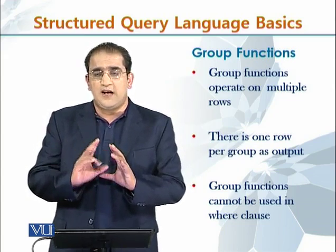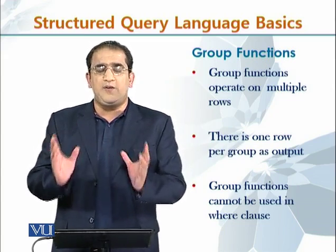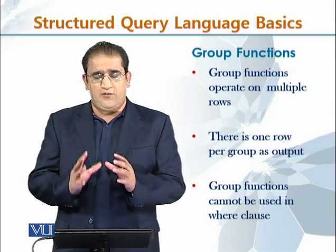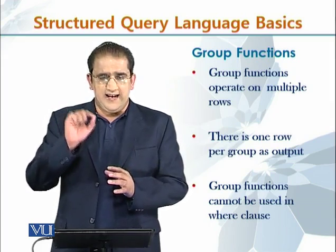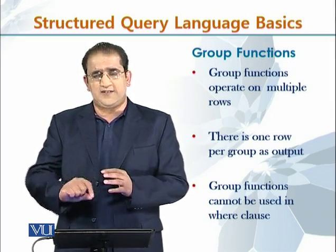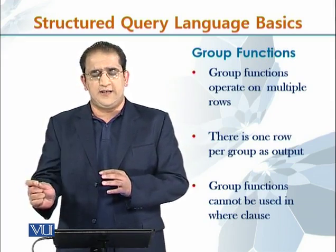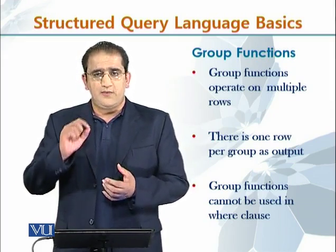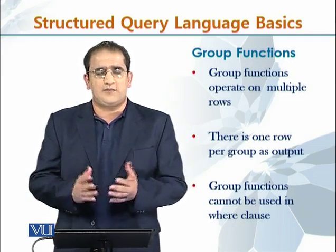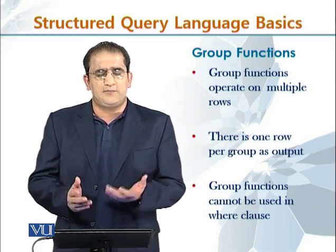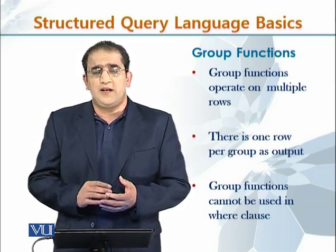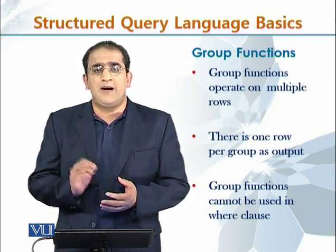So, group functions are totally different from single row functions. In single row functions, we have seen that there was one row input and one row output against it. In group functions, minimum one row is possible — that is the edge case, meaning the worst case. But the best case is you are having multiple rows.